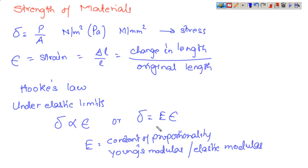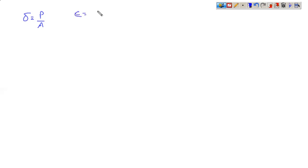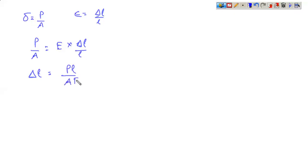Since stress is directly proportional to strain, we write stress equals E into strain. Using stress as force per area and strain as delta L by L, we get P by A equals E into delta L by L. Therefore, delta L equals PL by AE. This is the most important governing equation in strength of materials, from which many relationships are derived.